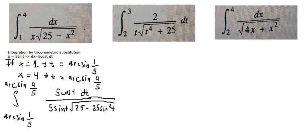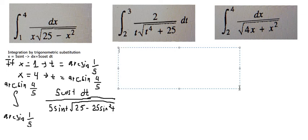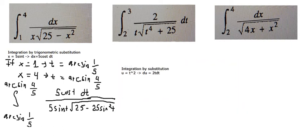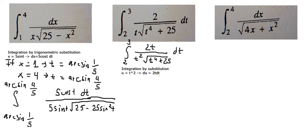Now let's go to the second one. We do the same technique but we need to use integration by substitution. We let u equal to t squared, so du equals 2t dt. Before we do the substitution, we need to multiply by t on the numerator and denominator.